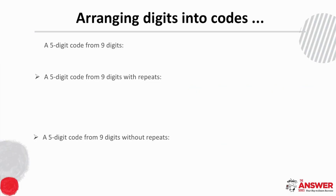Next let's have a look at when we have more digits available than the length of the code — here, a five-digit code from nine digits — and we consider this both with digits repeated and without digits repeated.